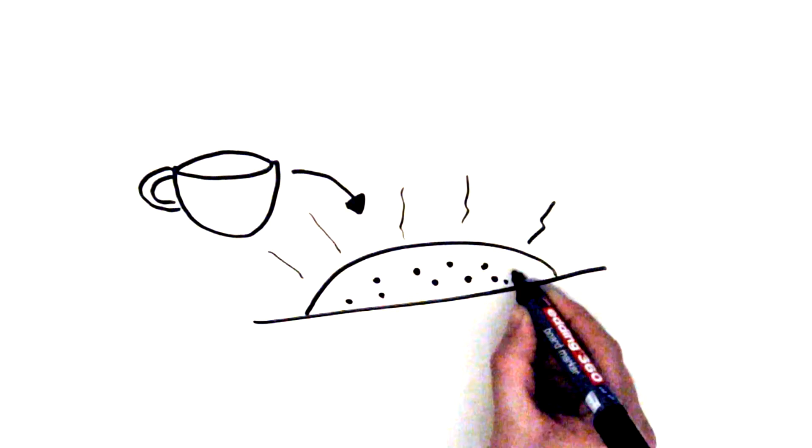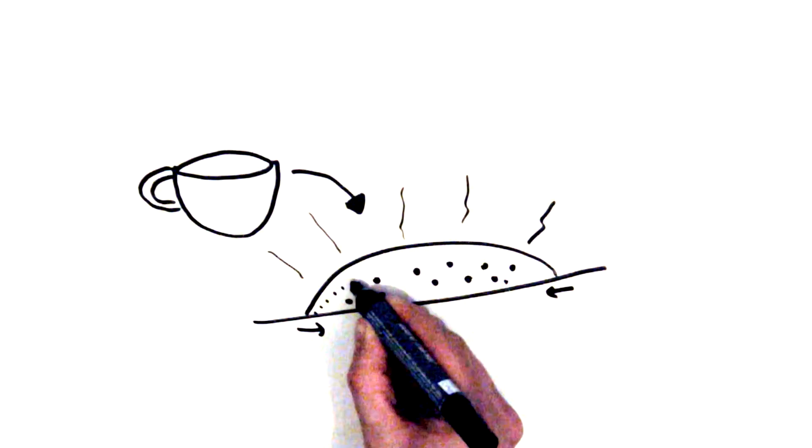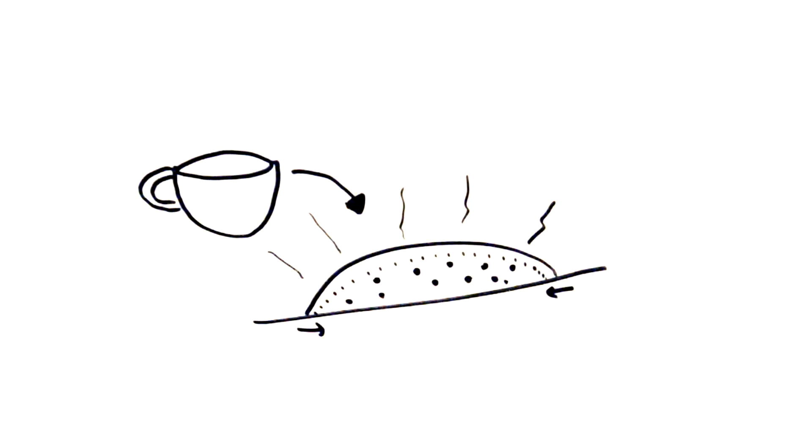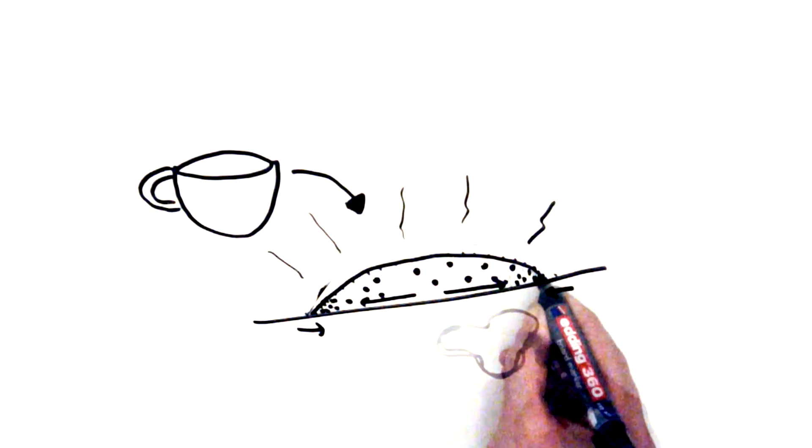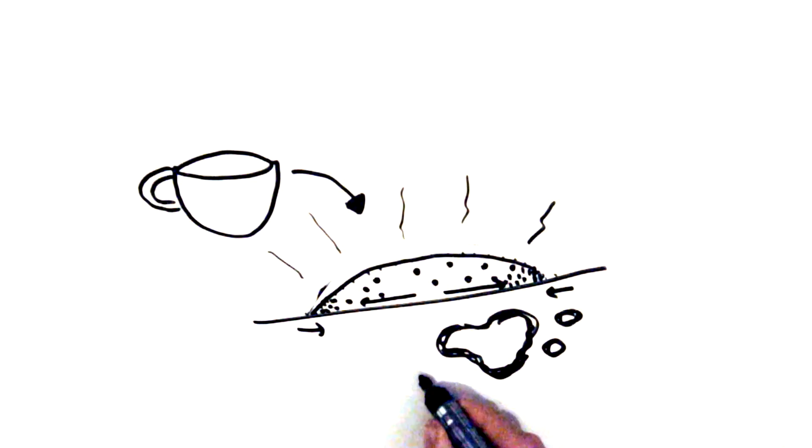When the water inside of a coffee spill starts to evaporate, the drop gets smaller and smaller. But there is a drag on the surface area. These two factors cause a flow of water towards the edge to replenish the evaporated water. This flow drags the tiny coffee particles towards the edge and forms a ring.